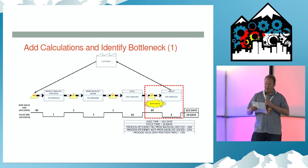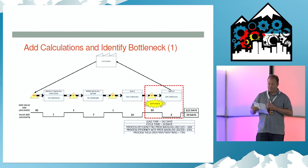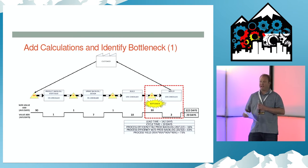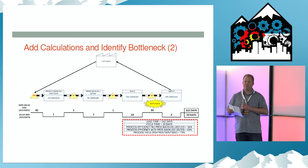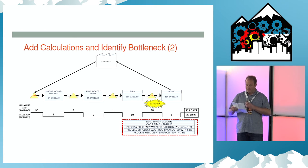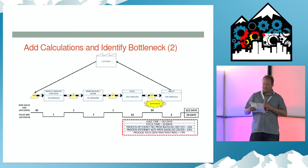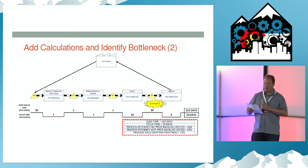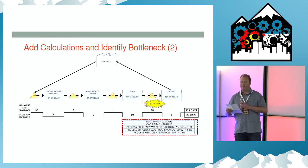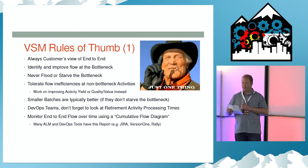The monthly deployment window on the far right is the bottleneck here with the large WIP and queue time. Improving any activity before that is just going to stack up work at that bottleneck. If we want to improve our delivery speed, we really have to address that deployment bottleneck first. The efficiency metrics show value add versus non-value add time. The 16% indicates we have a big gap with our customer demand rate, and 63% shows that we have a lot of opportunities to improve our work and process flow.